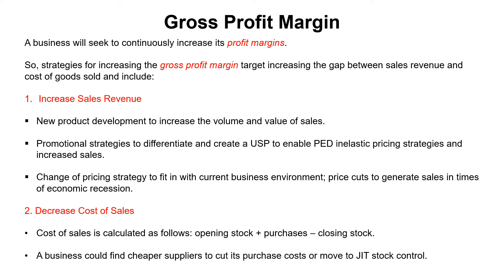For cost of sales, a lot of teachers don't explain how it's actually calculated: it's opening stock plus purchases minus closing stock. To reduce this figure, find new suppliers — use the internet, there are lots of B2B sites out there. You can go online as a business, buy in bulk, and have products shipped to you, cutting out people in the distribution chain. Going direct to a supplier, wherever they are in the world, decreases your costs.